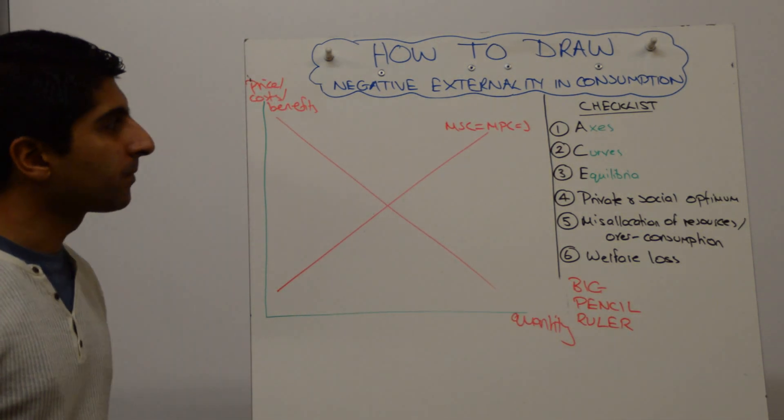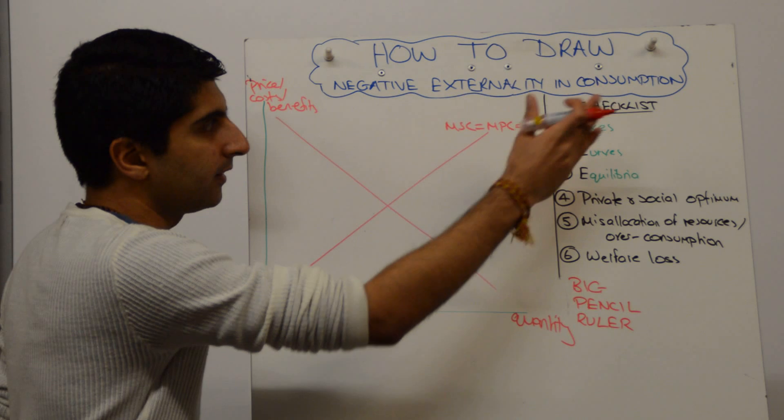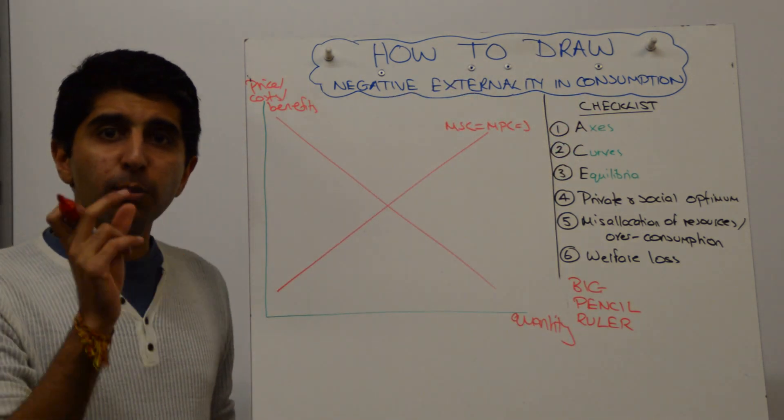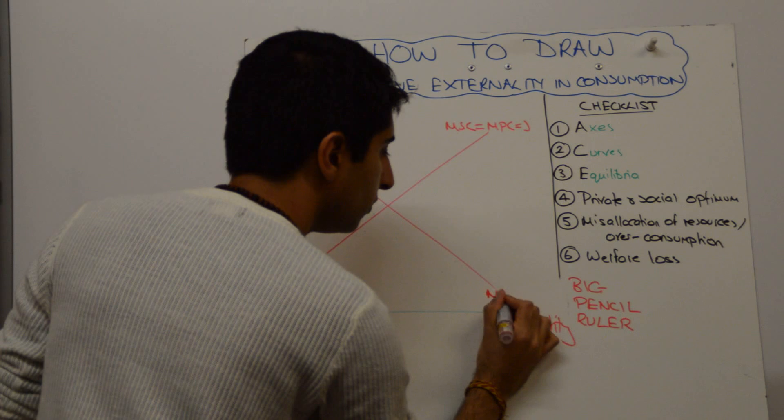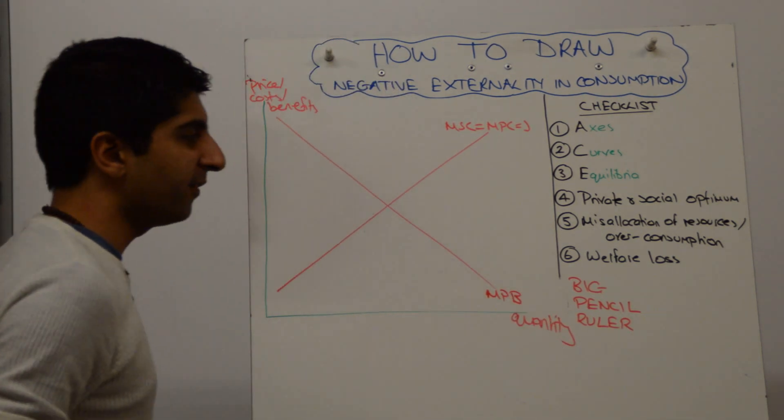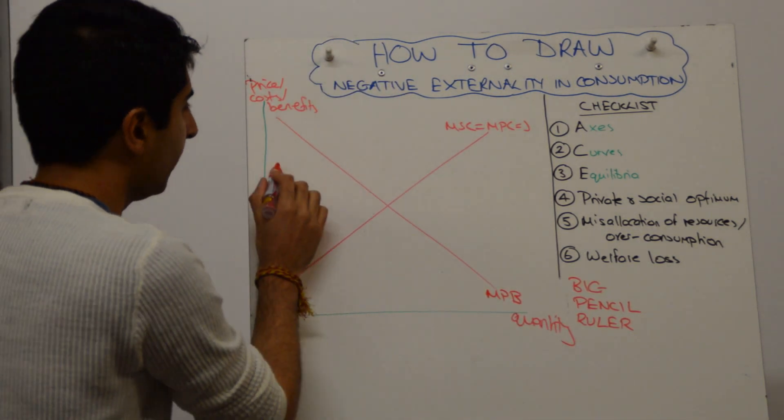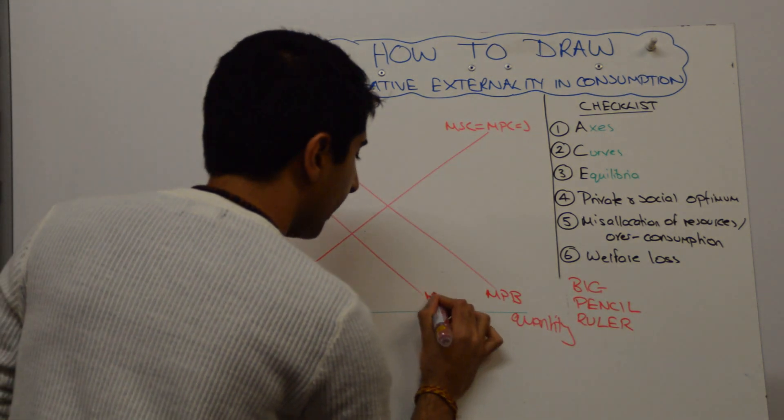The issue is with benefits. Right. Negative externality in consumption. Negative. Implying that the social benefit curve is to the left of the private benefit curve. So we can label this our marginal private benefit curve. We know that our marginal social benefit curve is to the left of it. We can label that.